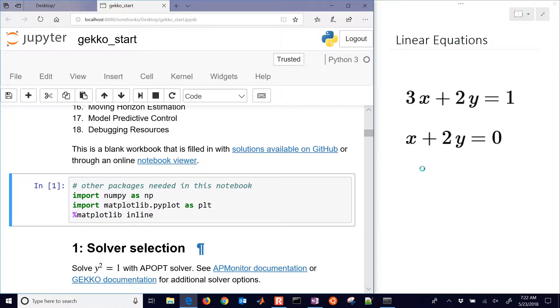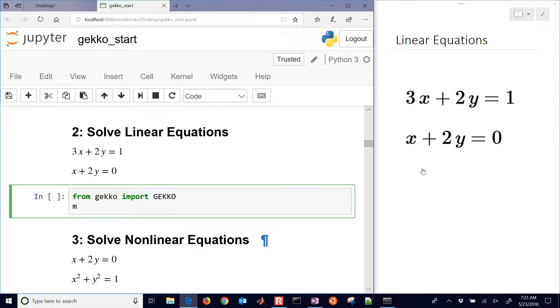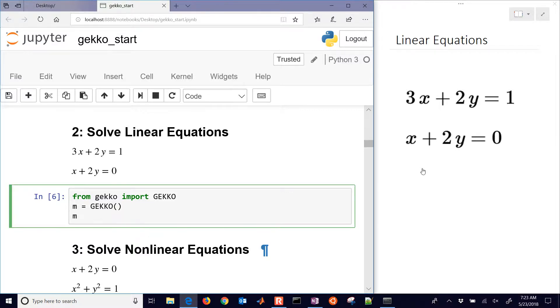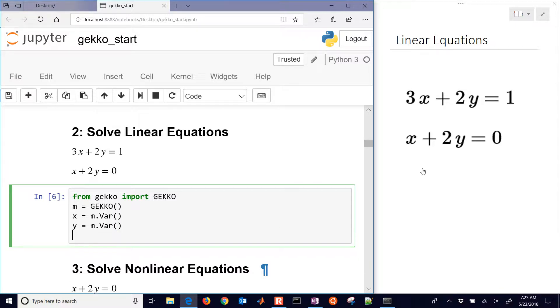So we want to use numerical tools to do this, and this is going to be problem number two in our tutorials for Gecko. We're going to do from Gecko import Gecko, and then m equals Gecko to create a new Gecko model. And then next we want to set up a couple variables, x equals m dot var for a new variable, and y equals m dot variable for the other variable as well.